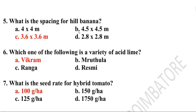Fifth question: What is the spacing for hill banana? Options are 4×4 m, 4.5×4.5 m, 3.6×3.6 m, or 2.8×2.8 m. The correct answer is option C: 3.6×3.6 meter.